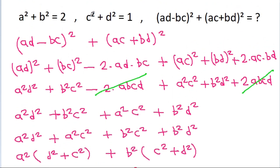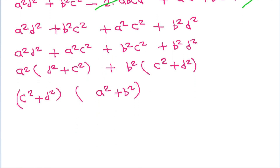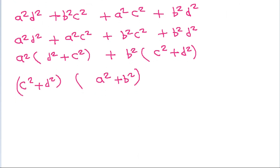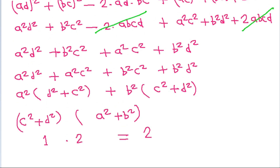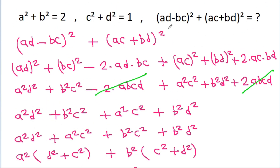And we have c square plus d square is equal to 1 and a square plus b square is equal to 2. So it is equal to 1 times 2, which is equal to 2. Thus this is equal to 2.